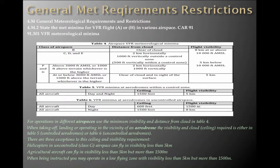Demystified: for operations in different airspaces, use the minimum visibility and distance from cloud in Table 4. When taking off, landing, or operating in the vicinity of an aerodrome, the visibility and cloud ceilings required are either in Table 5 for control zones. There are three exceptions: helicopters in uncontrolled Class G airspace can fly in visibility less than 5K; ag aircraft can fly in visibility less than 5K but it has to be more than 1,500 metres; and under flight instruction in a low-fly zone, visibility less than 5K but more than 1,500 metres.